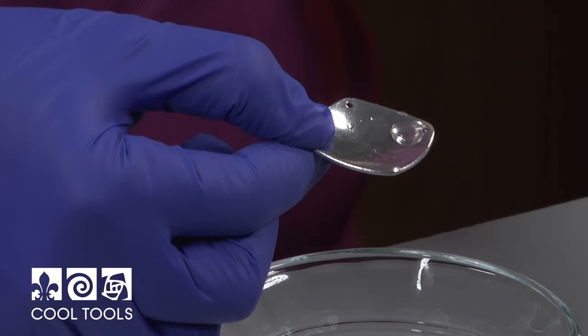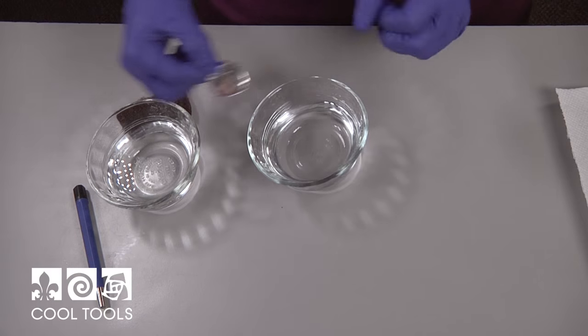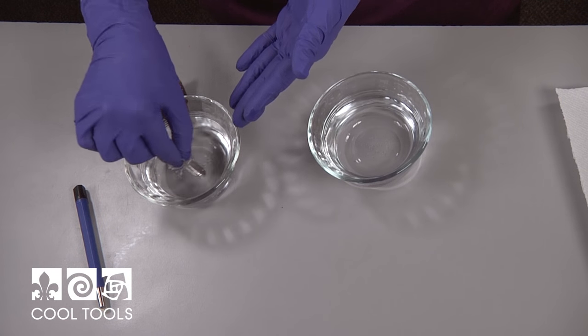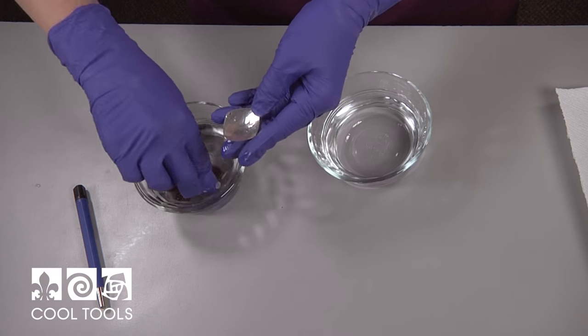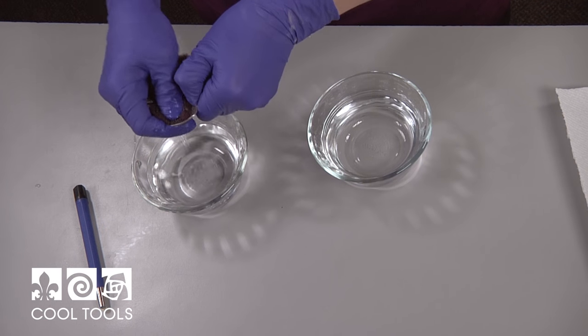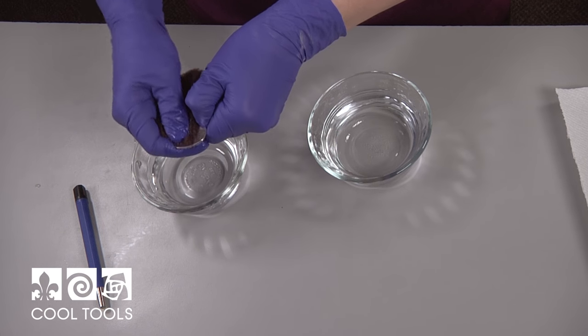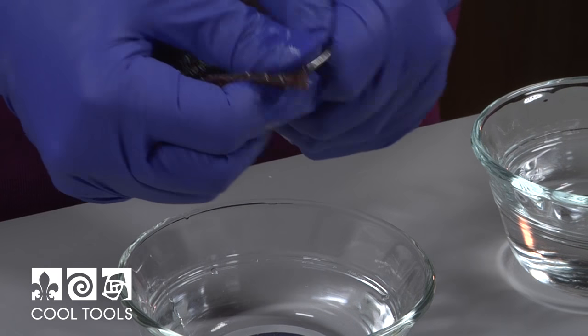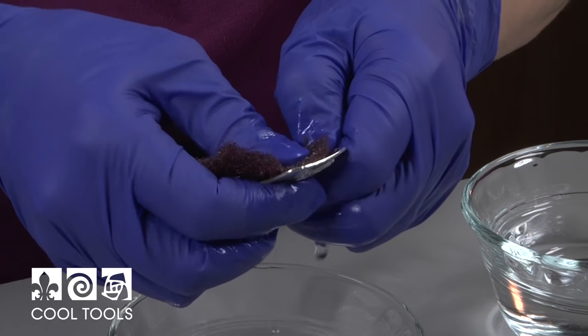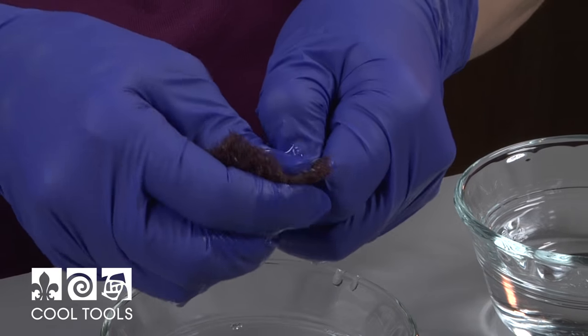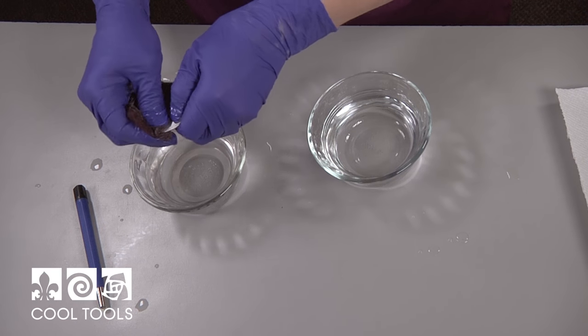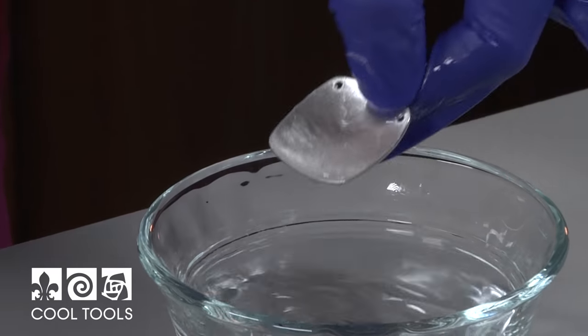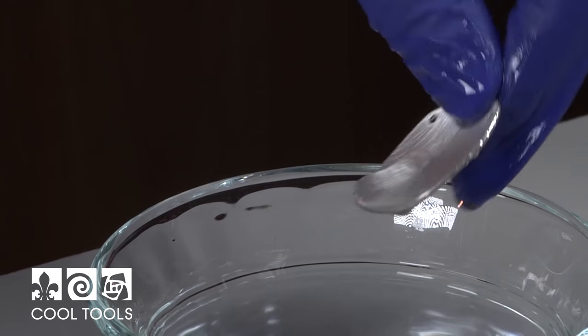So I've got about one-third water, two-thirds ammonia in this cup and I'm going to use a Scotch-Brite scrubber to really clean that surface and to give it a little bit of tooth to hold onto the enamel. So now instead of making those little beads, it's just sheeting on there. And that's what we wanted to see.